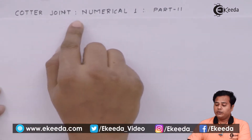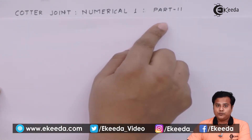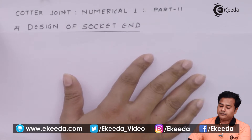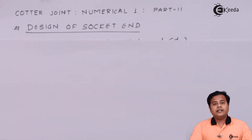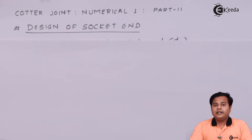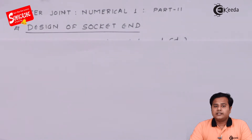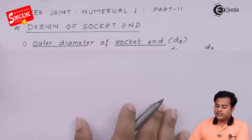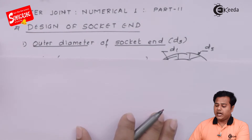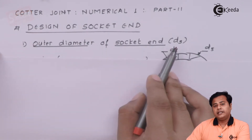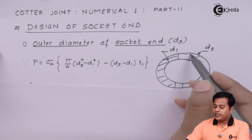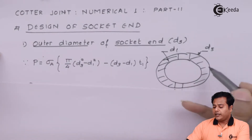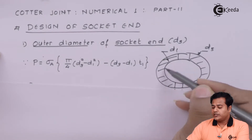So it is cotter joint numerical 1 Part 2. This is the design of the socket end. We know that the socket end is slightly different from the spigot end — it is prominently defined by its hole size. We are going to start with the outer diameter of the socket end and let us name it D3. If we take this cross-section, this is your actual socket, and inside it the hole is present.